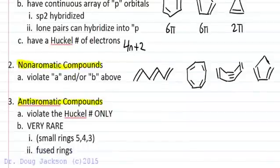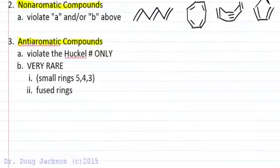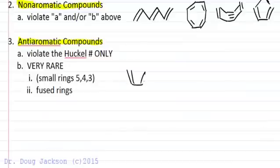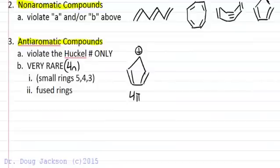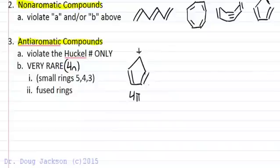For anti-aromatic compounds, we violate the Hückel number rule only. These are very rare, so if you have to guess, non-aromatic is probably the way to go. But if we force planarity with a very small ring — such as a 5-membered ring with a cation — we have 4 pi electrons, which is 4n. We force planarity and have a non-Hückel number, so this compound is anti-aromatic.